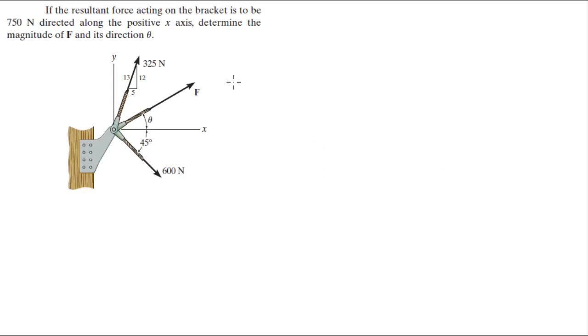For more videos visit forthesakeofeducation.com. Alright guys, let's do this problem that says if the resultant force acting on the bracket is to be 750 Newtons directed along the positive x-axis, determine the magnitude F and its direction theta.